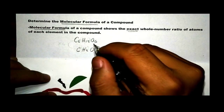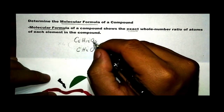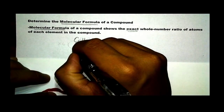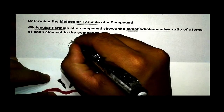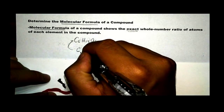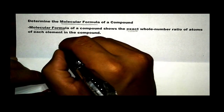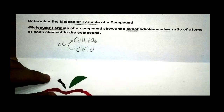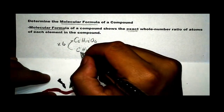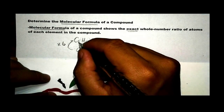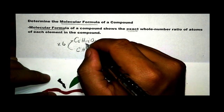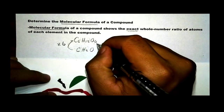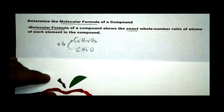If we look at the relationship between the empirical and the molecular formula, the subscripts of the empirical formula are multiplied by 6. So 1 times 6 gives you 6, 2 times 6 gives you 12, and 1 times 6 gives you 6 oxygen.